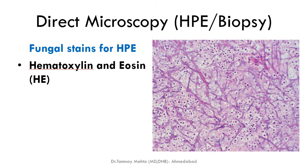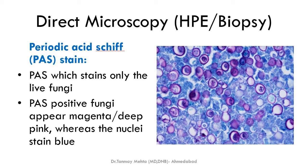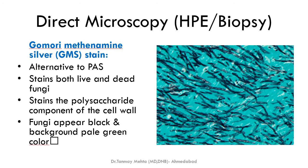The third type of direct microscopy is histopathological or biopsy examination, using special stains for fungi. The most commonly used is hematoxylin and eosin (H&E). The second, very specific for live fungi, is PAS stain (Periodic Acid-Schiff) — PAS-positive fungi appear magenta or deep pink while nuclei stain blue. The third fungal stain in histopathological examination is GMS — Gomori Methenamine Silver.